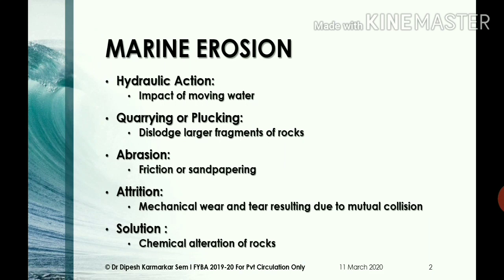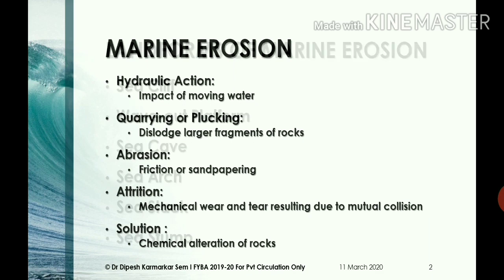Next is attrition. Attrition involves mechanical wear and tear and the consequential breakdown of fragments due to their mutual collision, affected by backwash and rip currents. It removes the fragments from the cliff base and transports them towards the sea. Solution refers to the chemical alteration of rocks, mainly carbonate rocks, due to their contact with seawater.